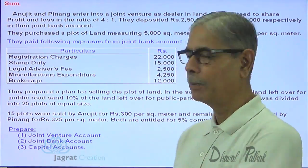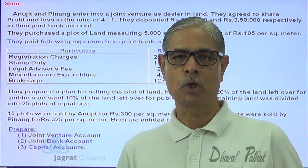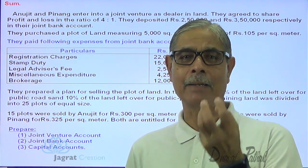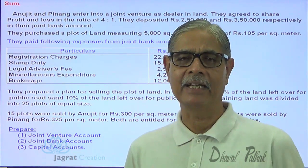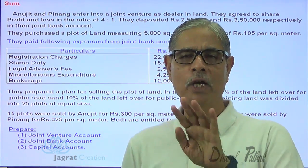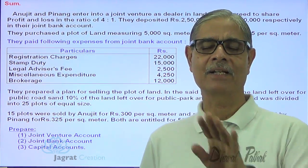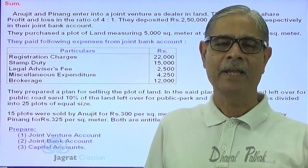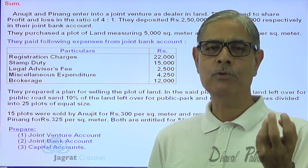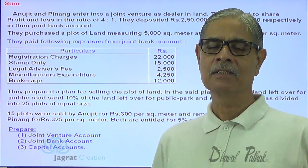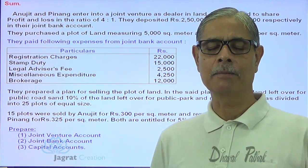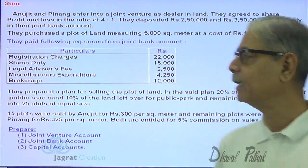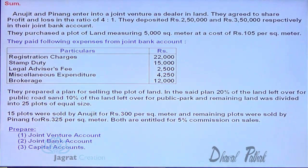These are the accounts to be prepared in the books of the joint venture identified as a separate accounting entity. Though joint venture businesses are not given separate names as we generally give to businesses, joint venture businesses are not given names. But let me start with the independent books.